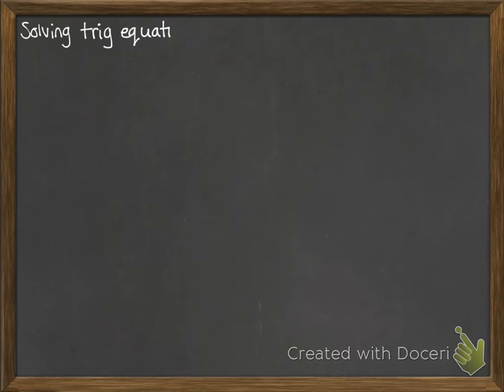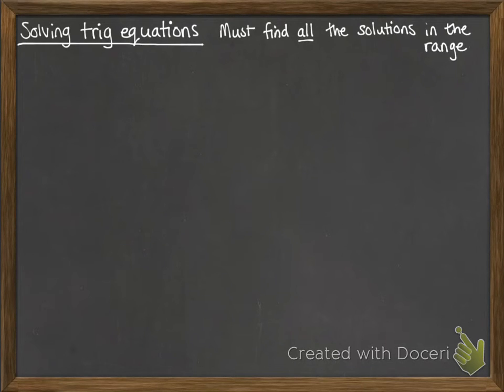Okay, so solving trig equations. Very, very important skill. You must find all of the solutions within a given range, so this is easiest to show you with some examples. Sine of x is equal to 0.8 and we want to find the solutions to x between 0 and 360 degrees.